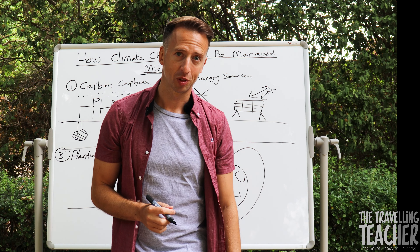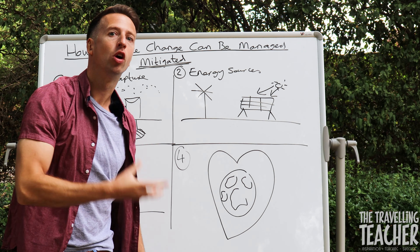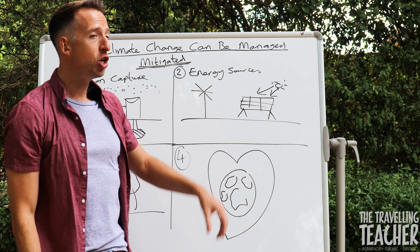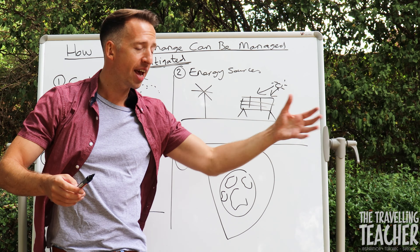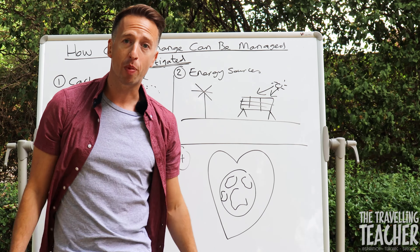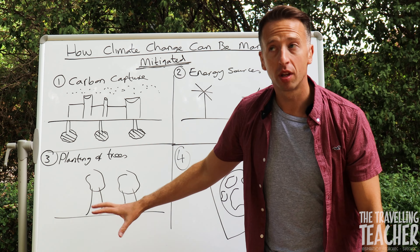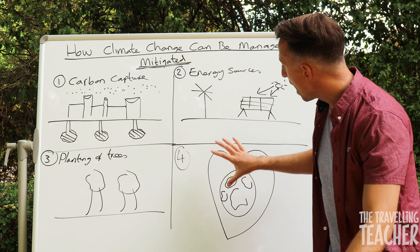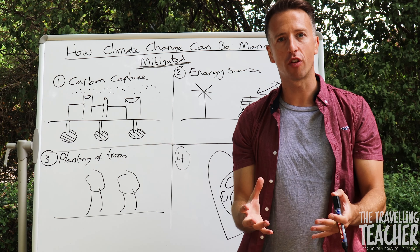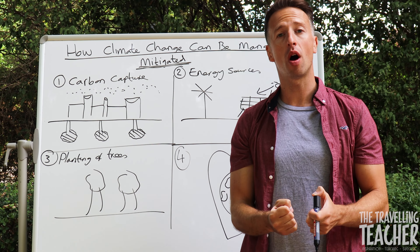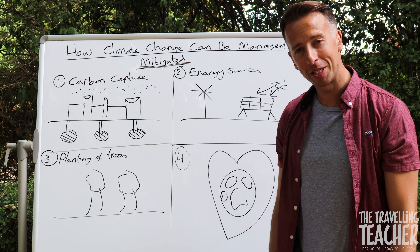Let's go through those four strategies again. Number one: carbon capture — take from the atmosphere, pump deep underground, very expensive. Number two: use alternative energy sources such as solar panels and wind turbines, using the sun's and wind's energy to generate electricity and move away from burning fossil fuels. Number three: afforestation — the planting of trees, takes out CO2 and gives out oxygen. Number four: international agreements, where large world governments come together and set targets to lower their carbon emissions. Those are the four strategies to mitigate climate change.